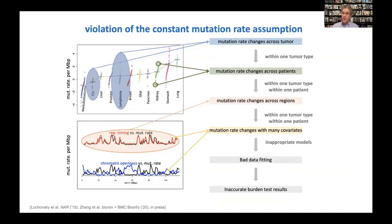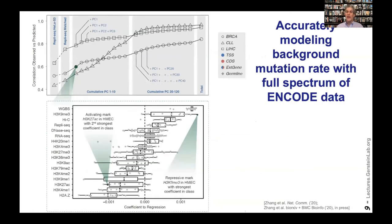The mutation rate is correlated with many different types of genomic signals in addition to replication timing — for instance, it's also correlated with open chromatin. ENCODE has a wealth of this genomic signal data. We've shown how you can put a lot of this data together into a model to estimate the background mutation rate. We do principal components of all the different types of ENCODE signal data and use these PCs to estimate background mutation rate. We need lots of PCs — often 10 or 20 — to accurately estimate it. Histone mark data is particularly important for this estimation.